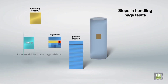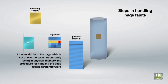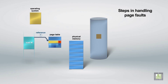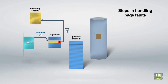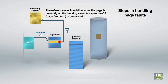If the invalid bit in the page table is set due to the page not currently being in physical memory, the procedure for handling the page fault is straightforward. We check an internal table, usually kept with the process control block, for this process to determine whether the reference was a valid or invalid memory access. The reference was invalid because the page is currently on the backing store, so a trap to the OS page fault trap is generated.